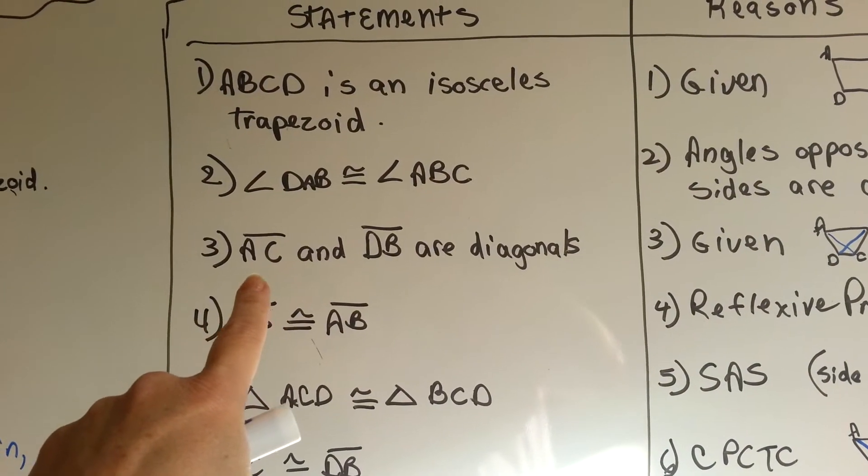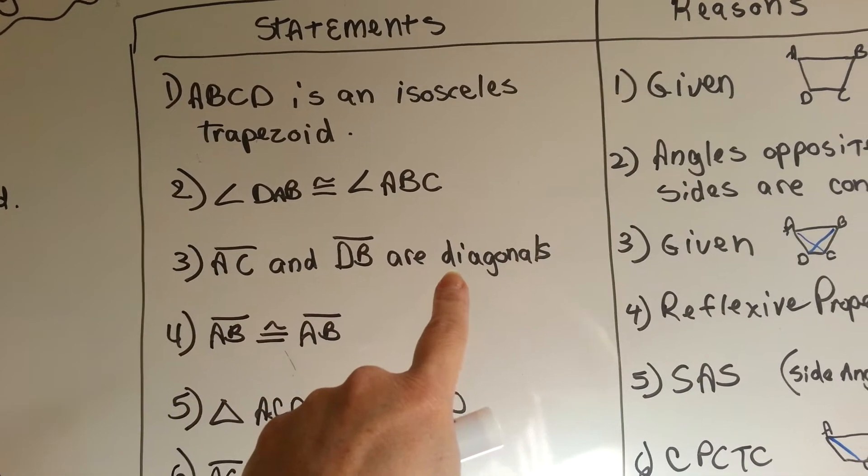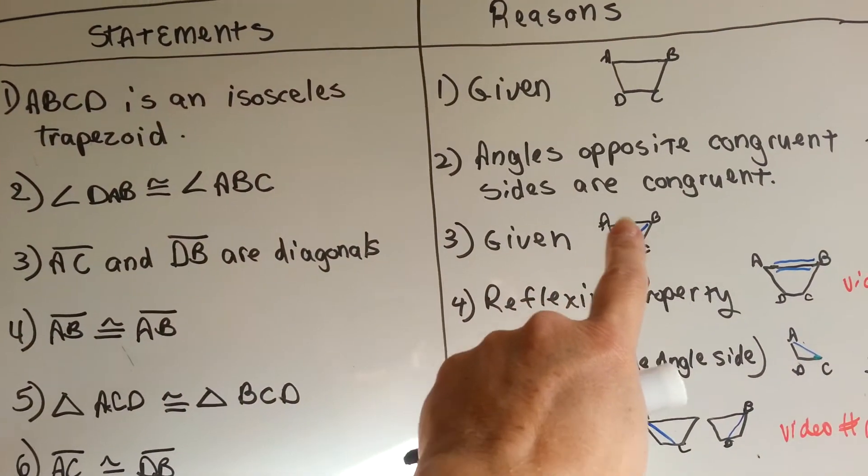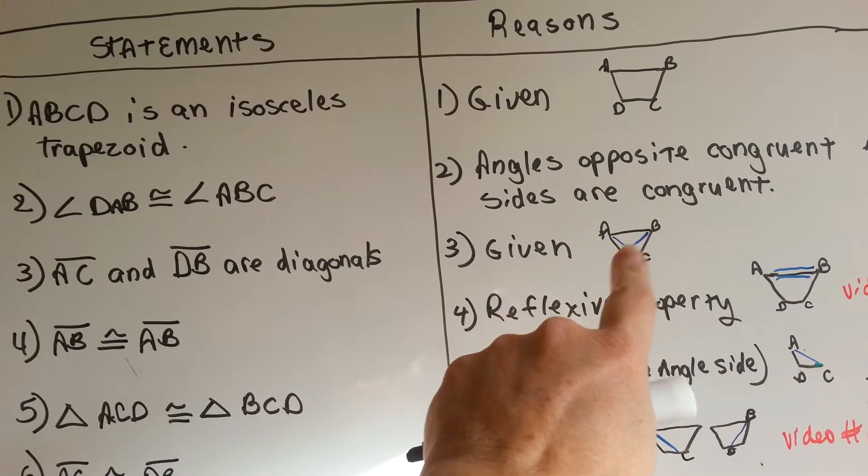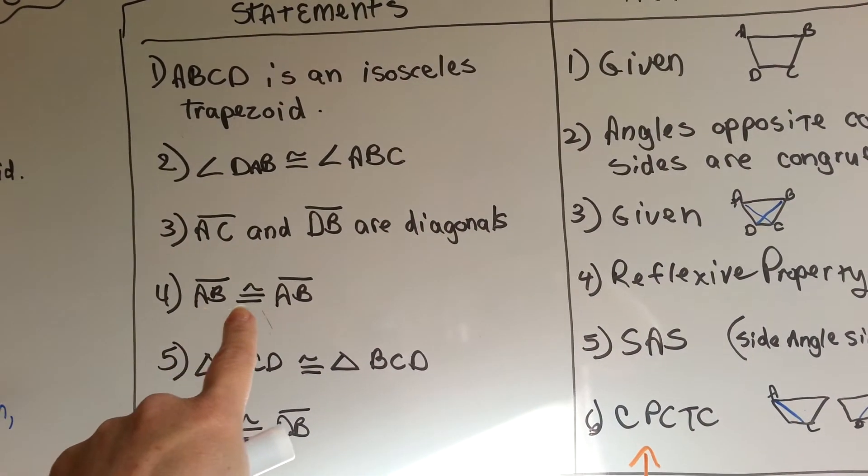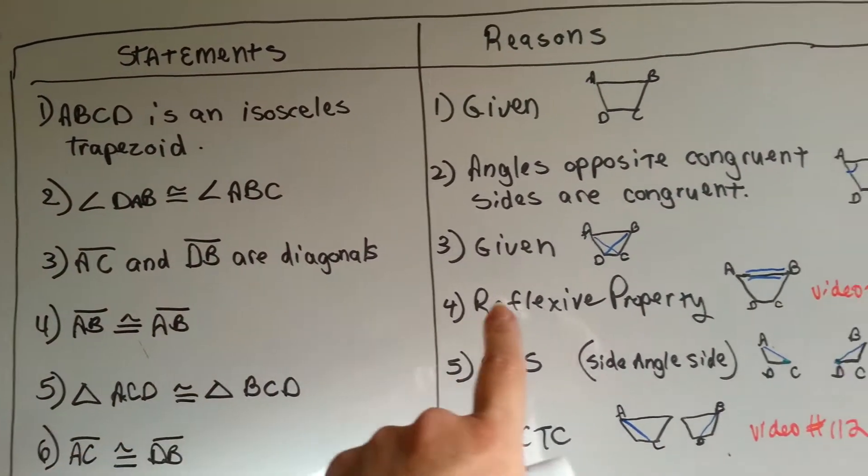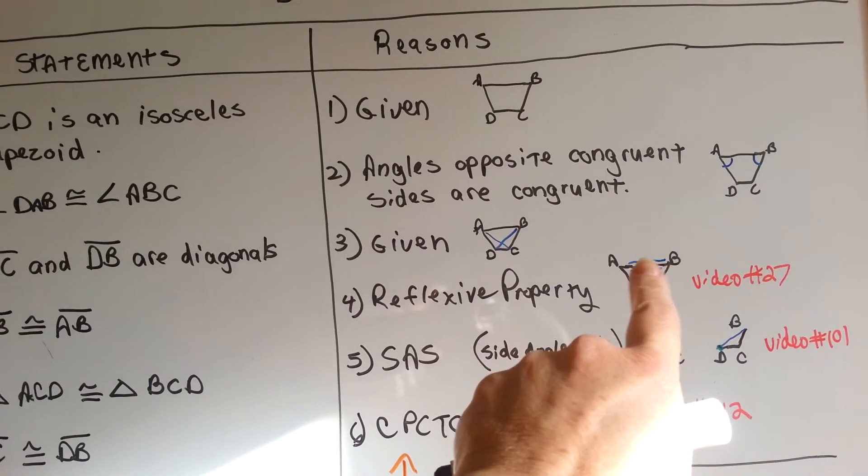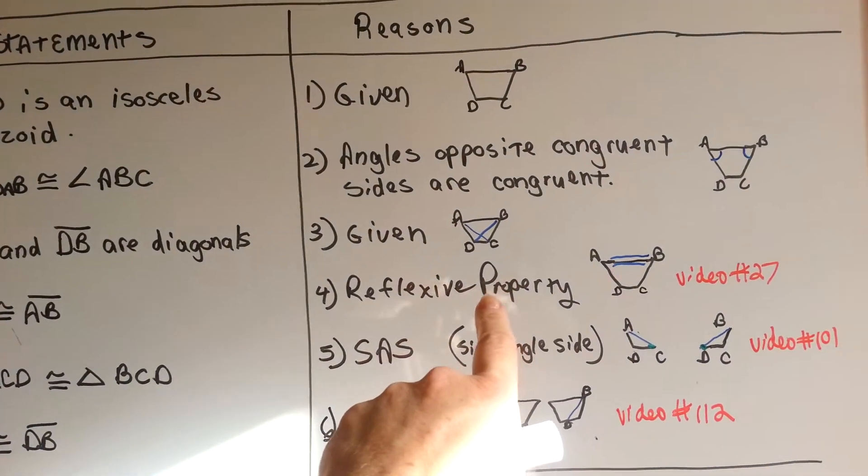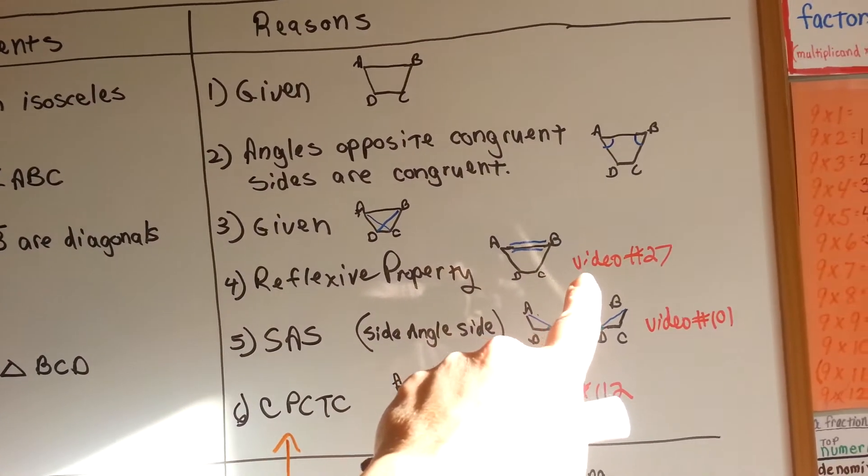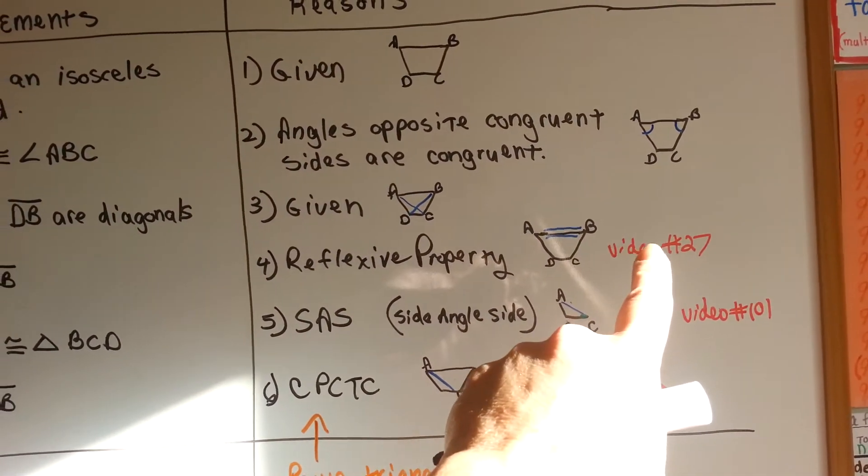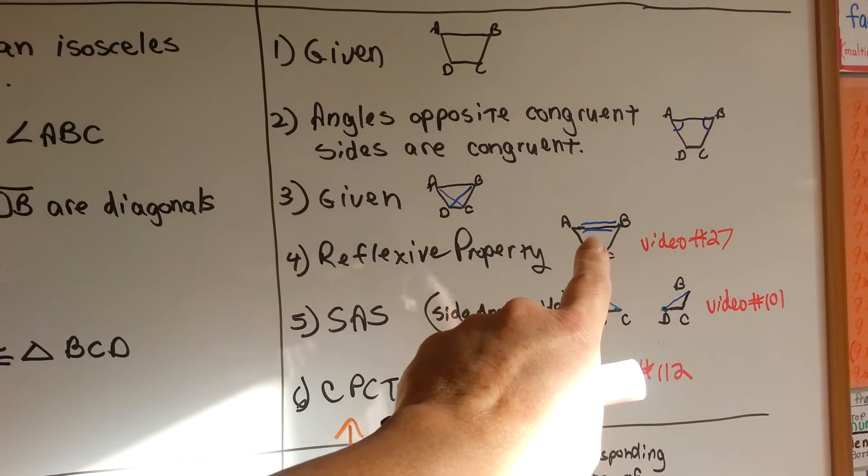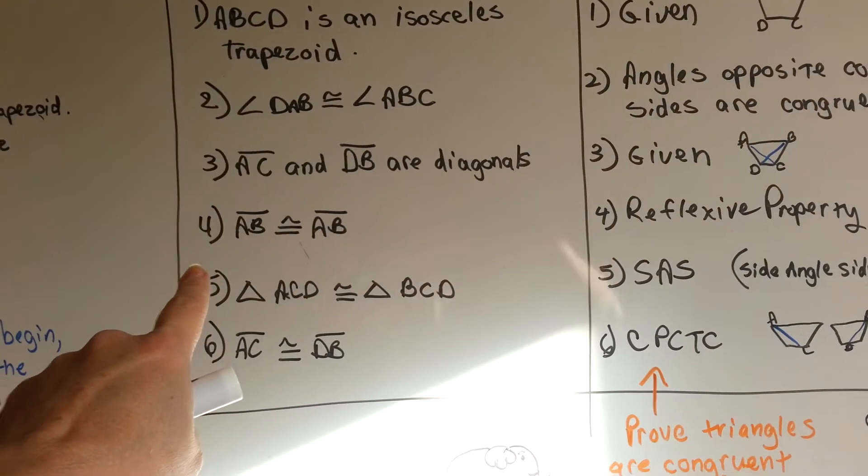Now, AC and DB are diagonals. That was given. Line AB is congruent to line AB. This line is congruent to itself. That's reflexive property. That's in video number 27 if you need a refresher. It mirrors itself. It's reflexive.